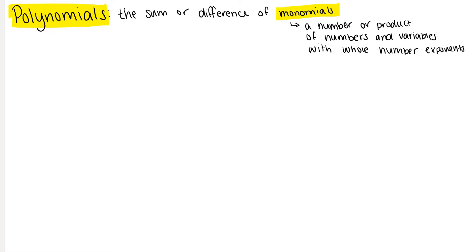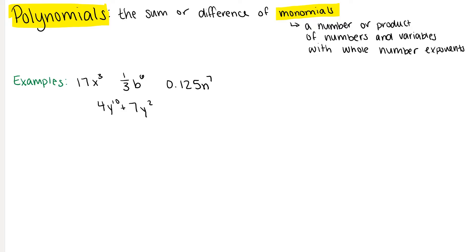Here are some examples: 17x to the 3rd, 1/3 b to the 6th, 0.125n to the 7th — these are all monomials. 4y to the 10th plus 7y squared, and 8t to the 3rd minus 3t, are both polynomials because they're the sum or difference of monomials.